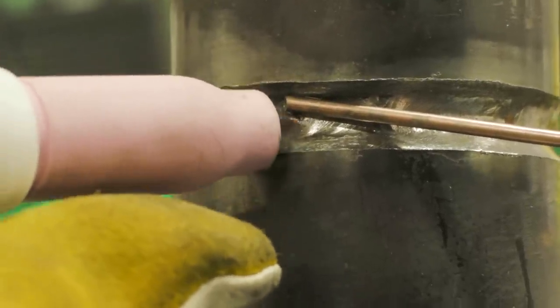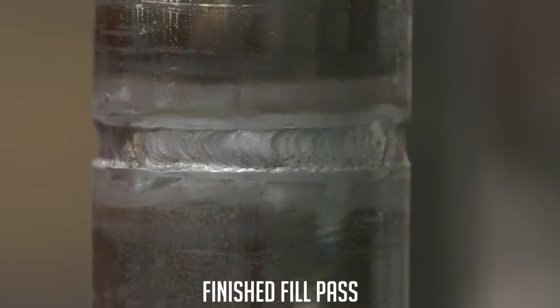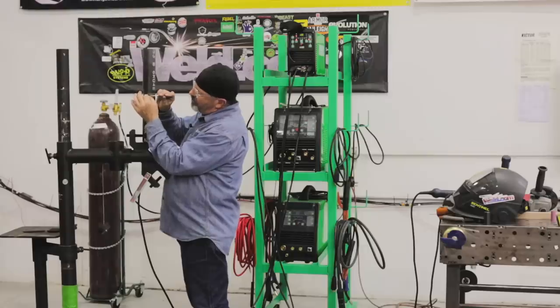Even though I'm weaving at a diagonal, the bead pattern lays in kinda flat. The filler wire, the filler metal chases the arc.